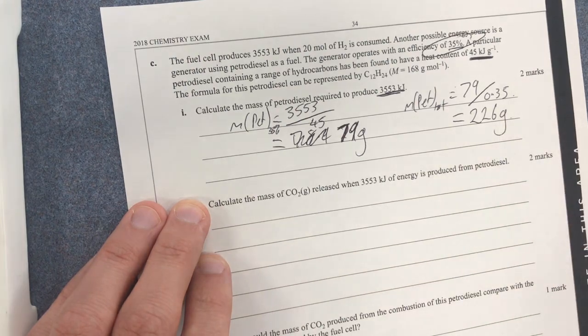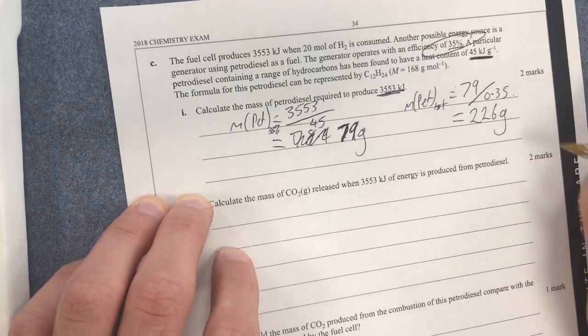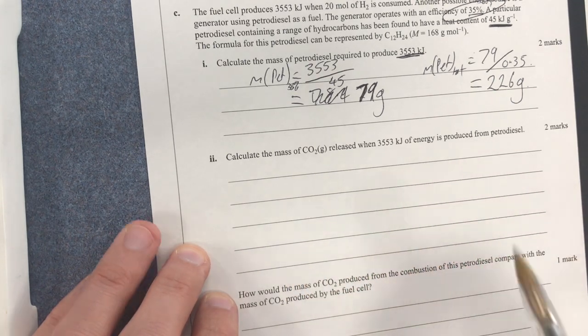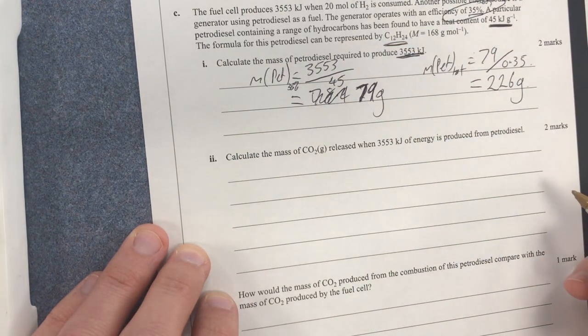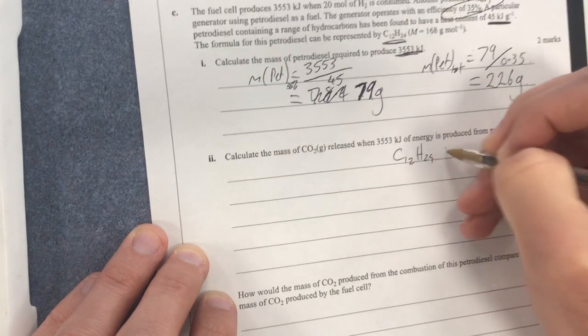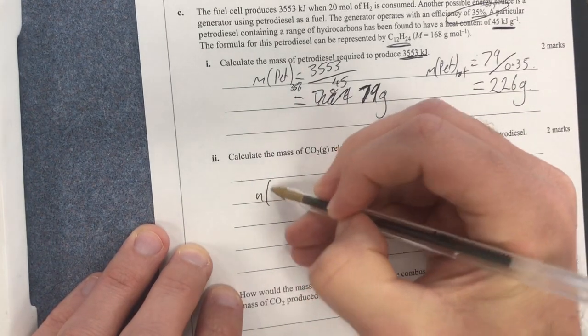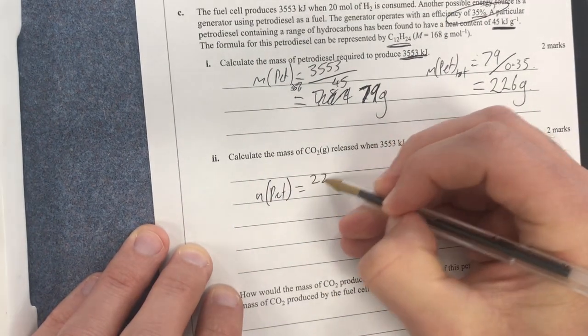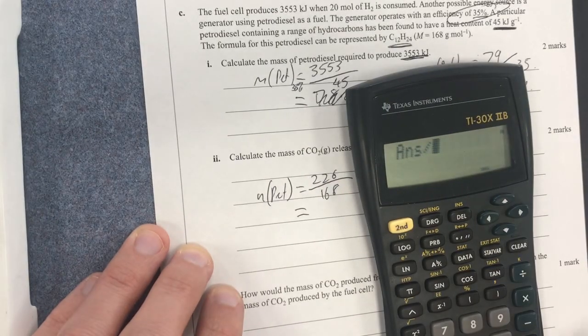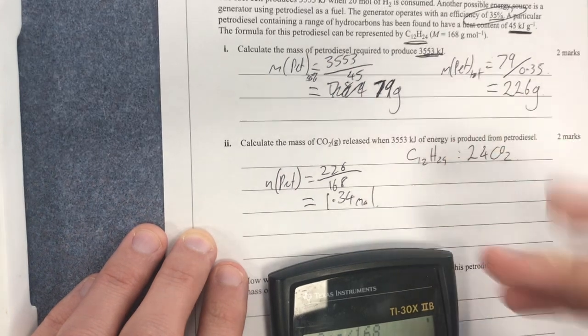Again, looking at my rounding here. Obviously, the fact that this would go up to 226. So that's how much petrol will be required. Calculate the mass of CO2 released when that much energy is produced. Well, let's have a look. I need to go CO2. It's a ratio of C12H24 to 12CO2. So I can find my number of moles of my petrol. So my number of moles of my petrol will be equal to 226 divided by 168.